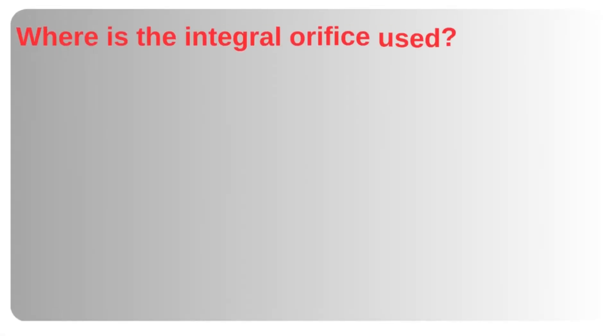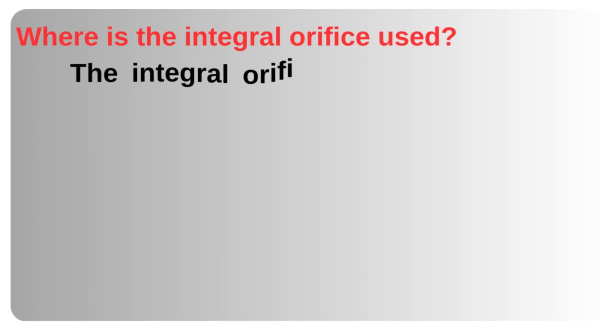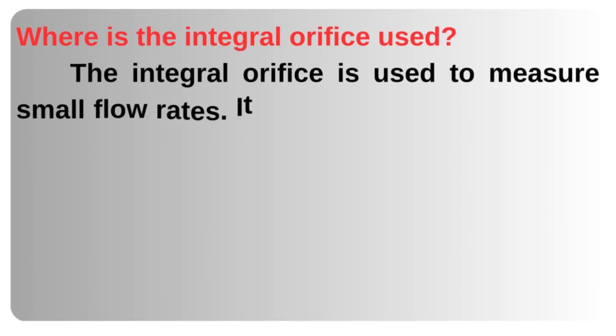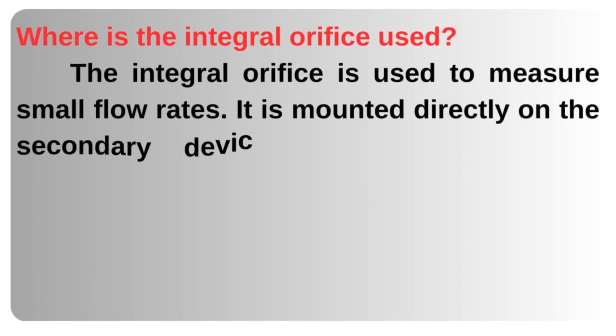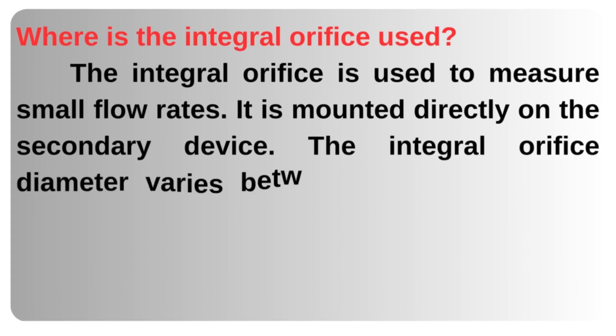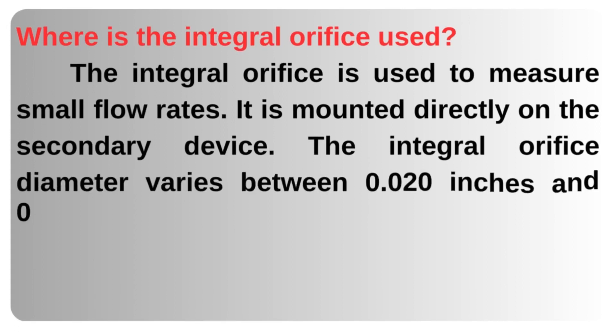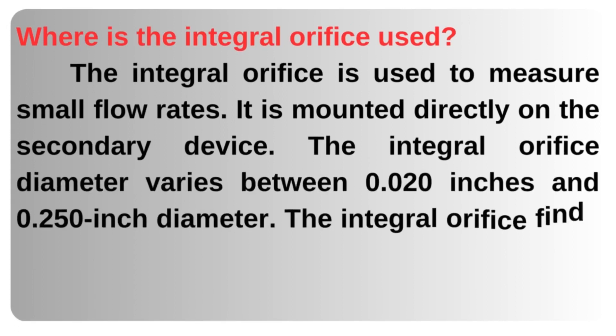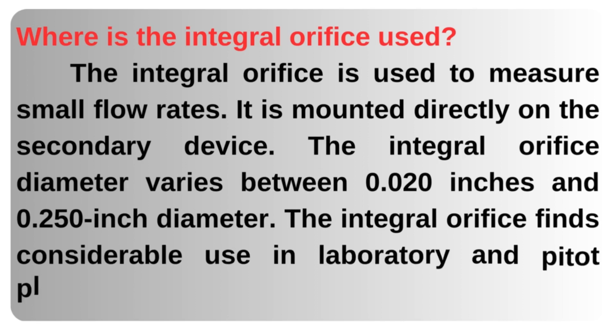Where is the integral orifice used? The integral orifice is used to measure small flow rates. It is mounted directly on the secondary device. The integral orifice diameter varies between 0.0 inches and 0.250 inch diameter. The integral orifice finds considerable use in laboratory and pilot plants.